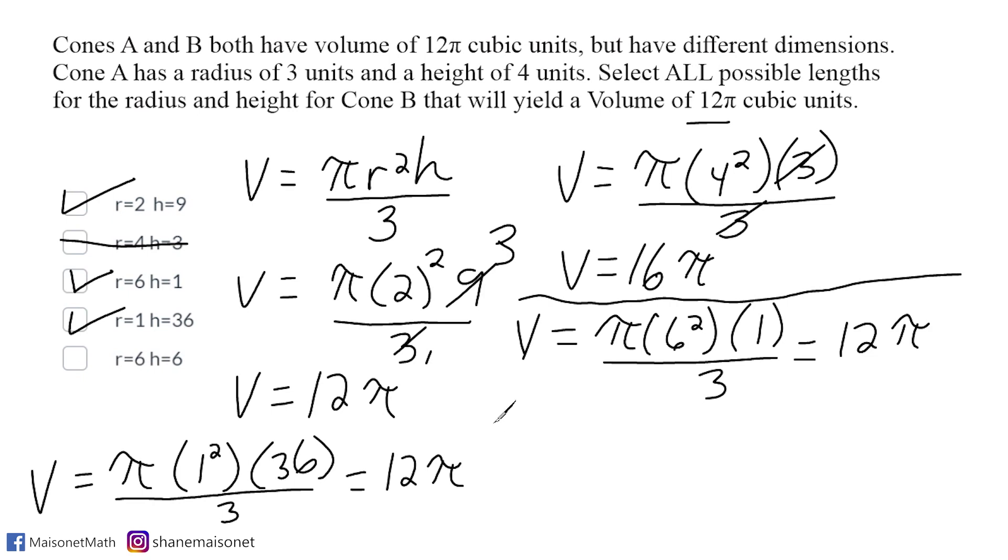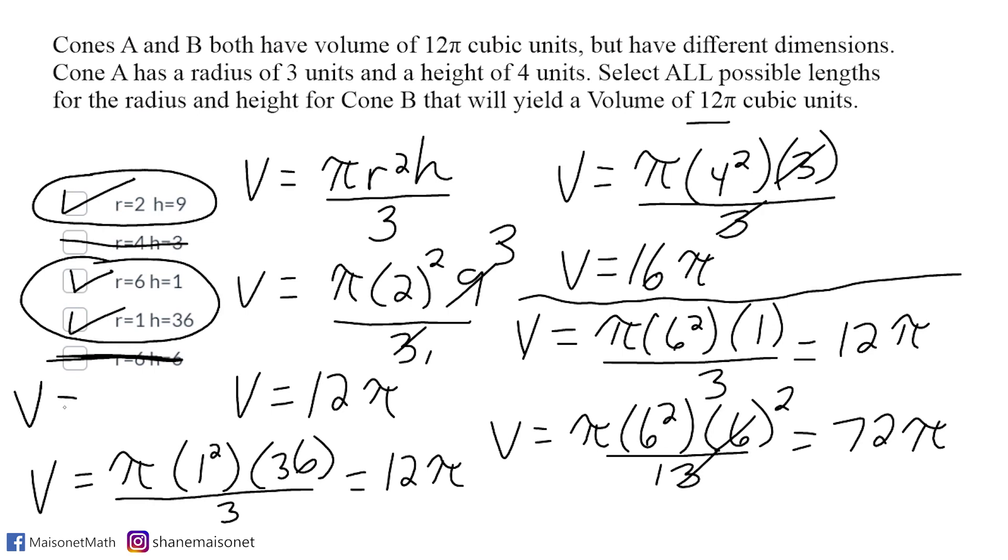For the last pair of numbers, we have a radius of 6. We have to square 6, multiply by a height of 6, and divide by 3. We could take the 6 and 3 and reduce. Because 6 divided by 3 is 2, we can change this to 2 over 1, which leaves us with 6 squared times 2, which is 36 times 2, which is 72. That combination would give us 72π, which does not make 12π. So the first, third, and fourth combinations of radius and height would give us a volume equal to 12π cubic units.